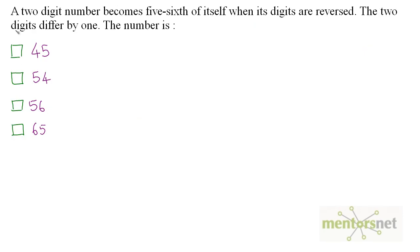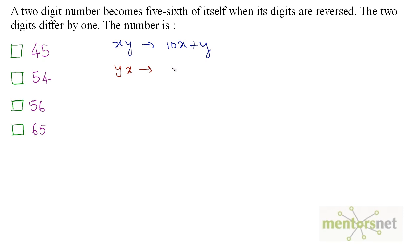Now the last question. A two-digit number becomes 5/6 of itself when its digits are reversed. The two digits differ by 1. The two-digit number is x, y with value 10x plus y. When reversed, it becomes y, x with value 10y plus x. The reversed number equals 5/6 of the original: 10y plus x equals 5/6 times 10x plus y.